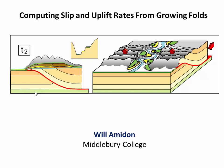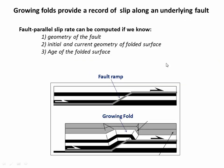Welcome to my video on computing slip and uplift rates from growing folds. Many folds form as sedimentary rocks are ramped up and over underlying thrusts. This often happens in foreland basins at the front of a mountain range, where convergence between two tectonic plates is accommodated along a series of thrust faults. For folks who study tectonics, it can be very helpful to know how quickly these various thrusts are slipping. It turns out that we can actually use the geometry of the overlying fold to estimate the slip rate on the underlying fault.